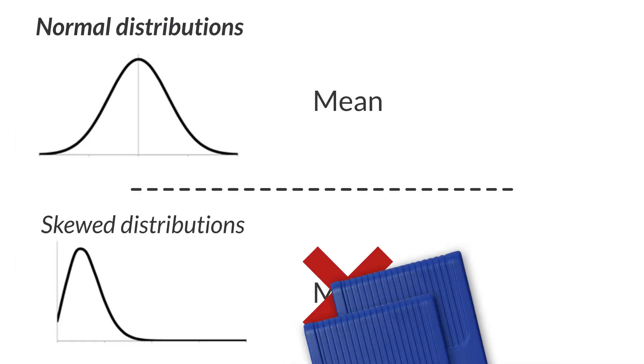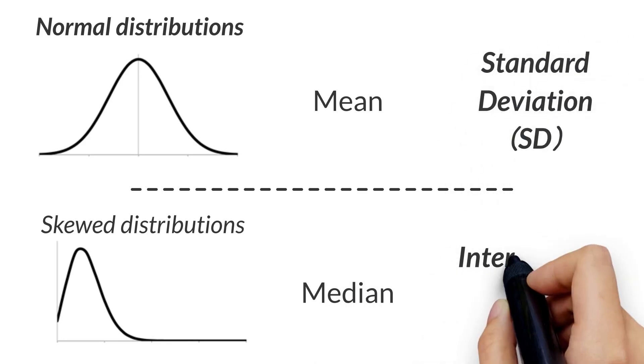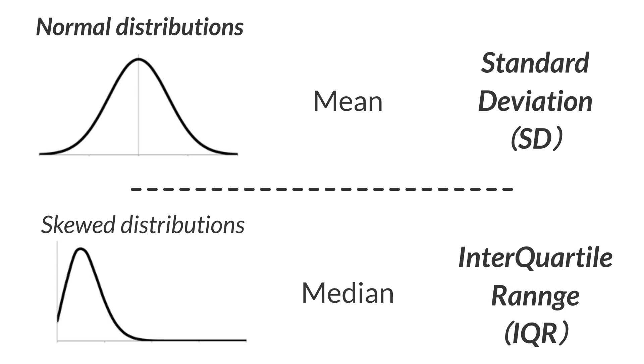the median is preferred over the mean as a representative value, and the interquartile range (IQR) is used instead of standard deviation. More on this will be covered in the next video.